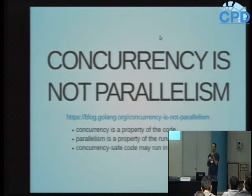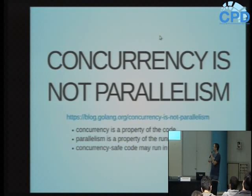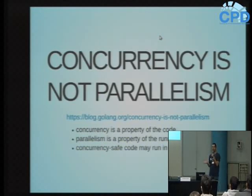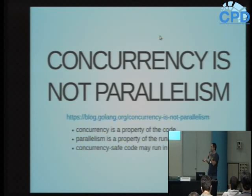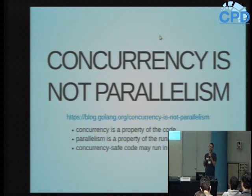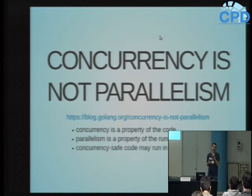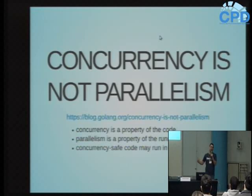Antes de entrar em GoRoutines especificamente, é importante entender a diferença entre concorrência e paralelismo - a gente costuma confundir esses termos. Concorrência é uma característica do seu código, e paralelismo é uma característica do programa em execução. Se eu escrevo código que cria várias threads e sabe lidar com concorrência, é um código concorrente. Mas isso não quer dizer que vai ser executado em paralelo. Se minha máquina tiver um único core, ela não é capaz de executar duas threads ao mesmo tempo. Se eu executar em uma máquina com quatro cores, ela pode executar várias threads ao mesmo tempo.